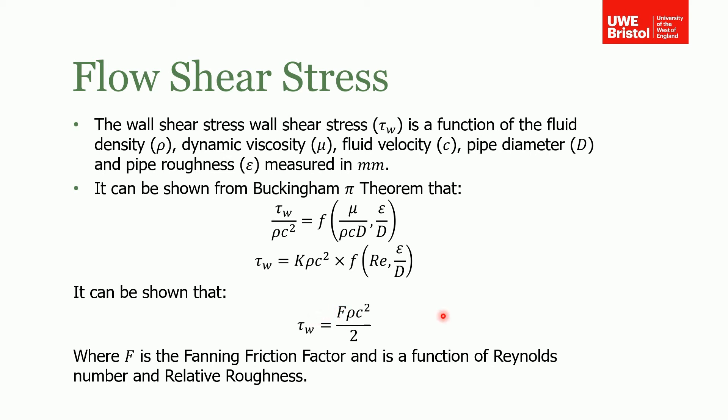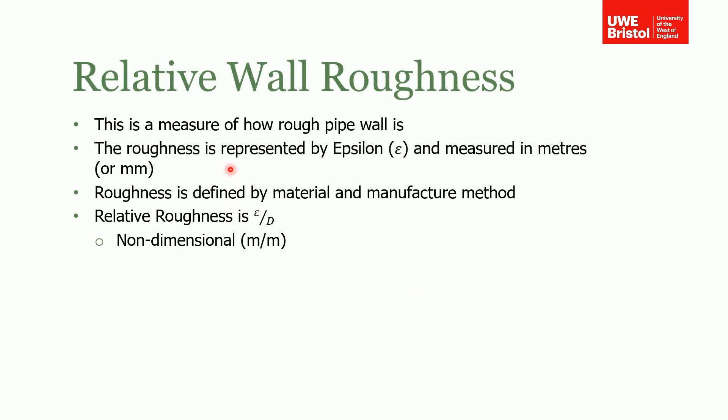Before I go on, I want to talk about the relative wall roughness. This is a measure of how rough the pipe wall actually is, represented by epsilon (ε) and measured in meters or millimeters. The roughness is defined by different materials, the manufacturing method, and the age of the material—imagine a rusted pipe would have high roughness compared to a brand new smooth pipe. The relative roughness is non-dimensional because it's that length divided by another length, giving us a non-dimensional group.